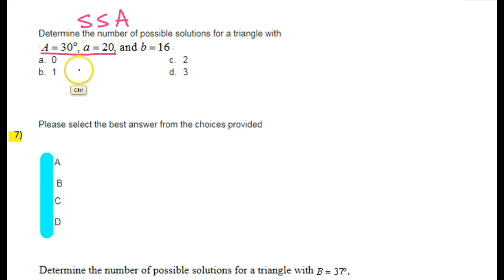When we have side-side-angle, we don't know if you can actually form a triangle out of this. There might be zero triangles, or there might be one triangle, or maybe we can make two triangles. So we have to investigate.